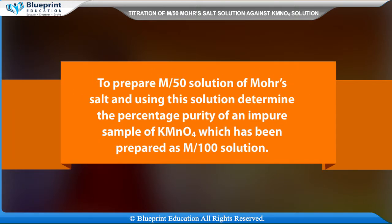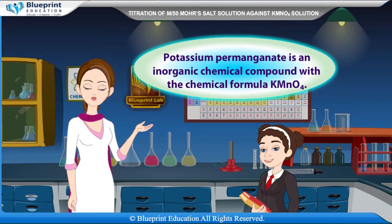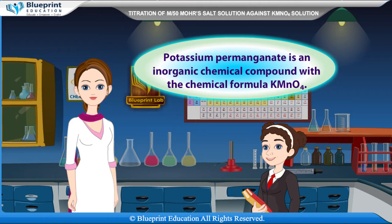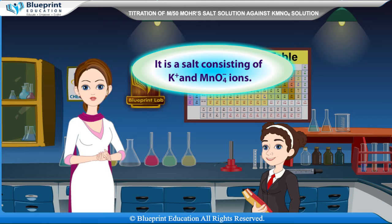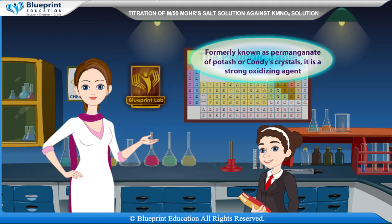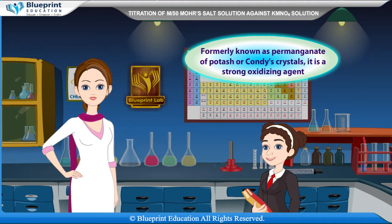To prepare M/50 solution of Mohr's salt and using this solution, determine the percentage purity of an impure sample of KMnO4 which has been prepared as M/100 solution. Potassium permanganate is an inorganic chemical compound with the chemical formula KMnO4. It is a salt consisting of K⁺ and MnO4⁻ ions, formerly known as permanganate of potash or condé crystals. It is a strong oxidizing agent.